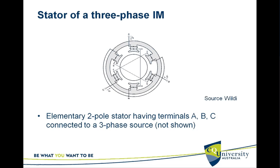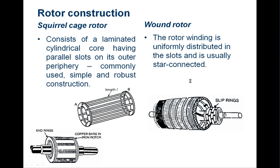There are three pairs, and all six poles are equally spaced around the circumference of the stator. This is how the stator winding is arranged.